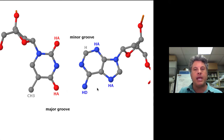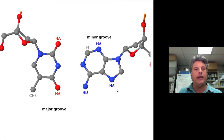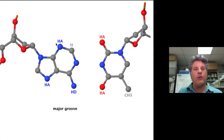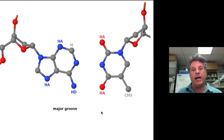Whereas in the major groove there is a pronounced asymmetry. If we switch this base pair so that A was on the left and T on the right, in the minor groove there would still be HA, H, HA — but in the major groove we would have HA, HD, HA, and CH₃ going left to right. An interacting protein would be able to recognize the difference between an AT base pair and a TA base pair in the major groove, but would have difficulty doing so in the minor groove.